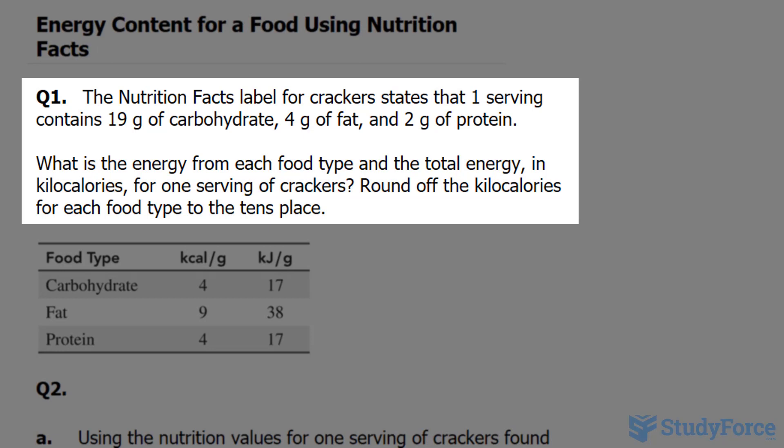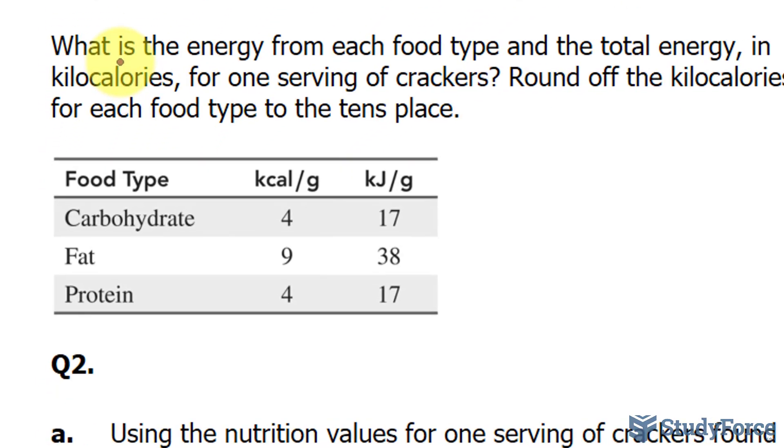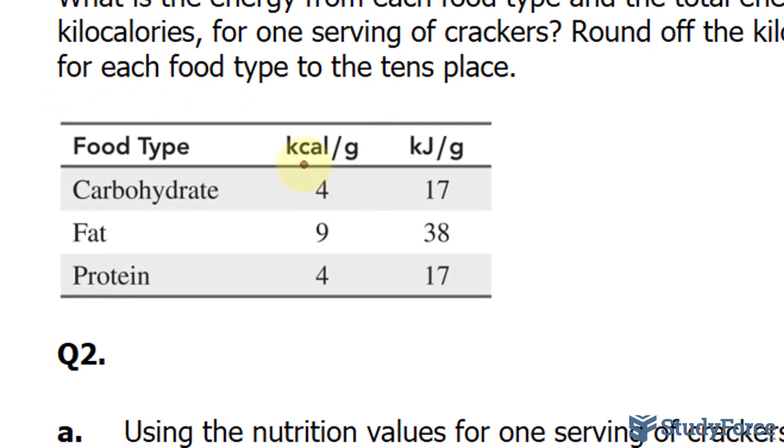Round off the kilocalories for each food type to the tens place. So let's begin with carbohydrates. We'll use the chart below to help us out. We're told that there are 19 grams of carbohydrates per serving. And according to this chart, there are 4 kilocalories per every gram of carbohydrate.